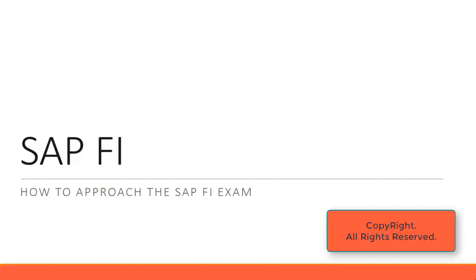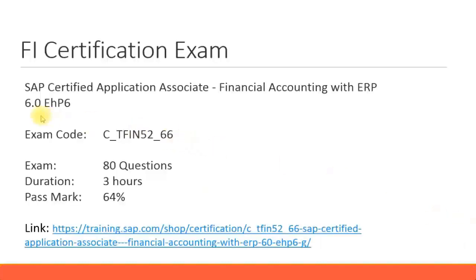Let's look at how to approach the SAP FI certification exam. The exam title is SAP Certified Application Associate in Financial Accounting with ERP 6 Enhancement Package 6. This is the title of your certification. It tells you which module you are specializing in — Financial Accounting — what the system is — ERP 6 — and what the version is — EHP 6.